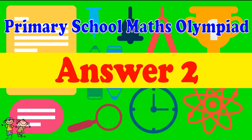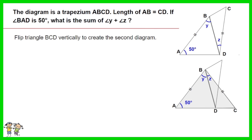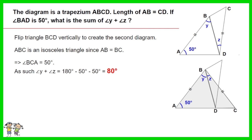Answer for question 2: Flip triangle BCD vertically to create the second diagram. ABC is an isosceles triangle since AB equals BC. As such, angle BCA equals 50 degrees. Thus angle Y plus angle Z equals 180 minus 50 minus 50. The answer is 80 degrees.